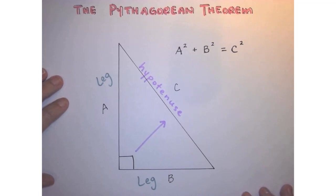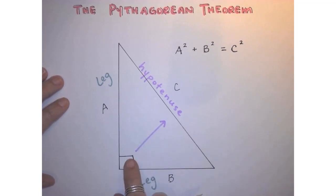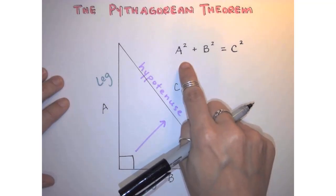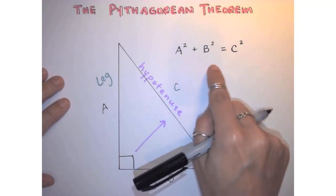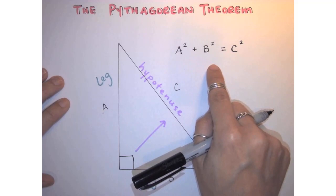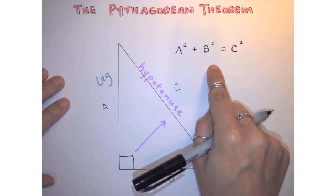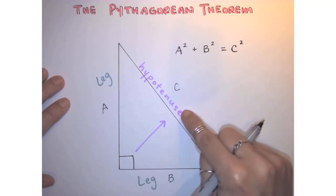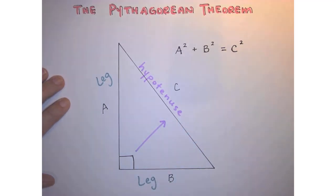What the Pythagorean Theorem states is that if we have a right triangle, then A squared — the length of side A squared — plus B squared, the length of side B squared, will equal C squared, the length of the hypotenuse squared.